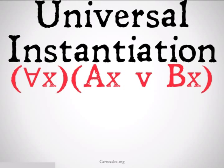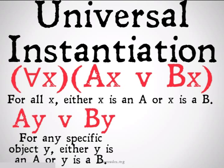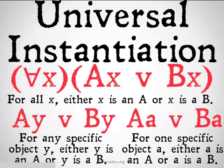An example of this would be: for all X, either X is an A or X is a B. We can conclude from this that for any specific object Y, either Y is an A or Y is a B. Or we can conclude, for one specific object A, either A is a B or A is an A. Note that statement functions like AY or BY will be represented here as 'for any' — this is not technically the appropriate translation, as they have no meaning without a binding quantifier, but it serves as an explanation of their meaning beyond their symbolic form.